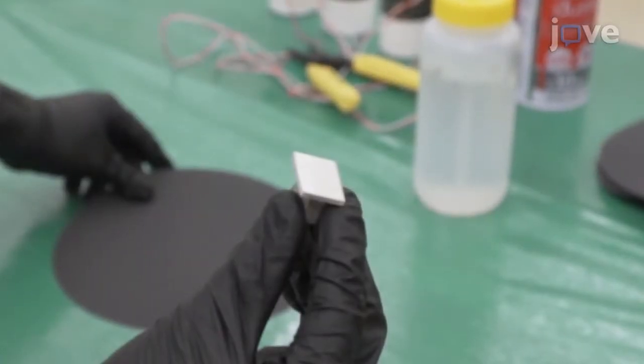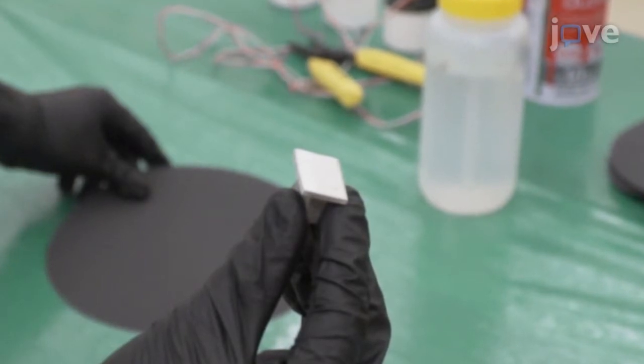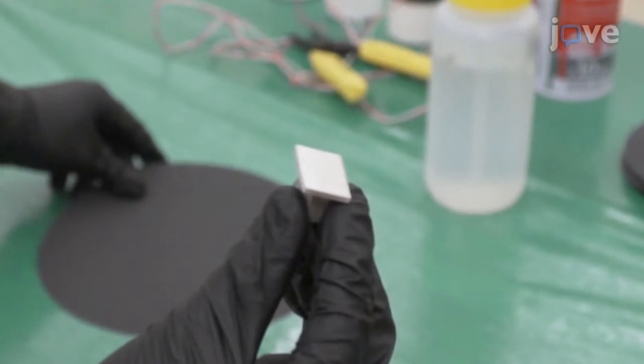Begin by using a computer numerical control machine to cut as-received aluminum 3003 alloys into several 1.5 by 2 square centimeter coupons.